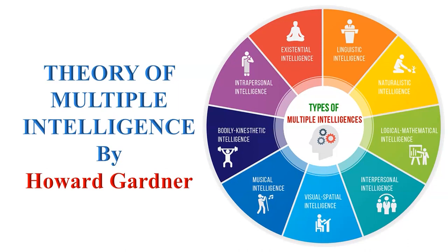Gardner initially identified eight intelligences and later added a ninth. Please remember this. The first is linguistic intelligence — the ability to understand and use language effectively. People with strong linguistic intelligence are good at reading, writing, speaking, and listening. Poets, writers, and public speakers often exhibit this. Then we have logical-mathematical intelligence, characterized by strong problem-solving and logical reasoning abilities; scientists and mathematicians often possess this.